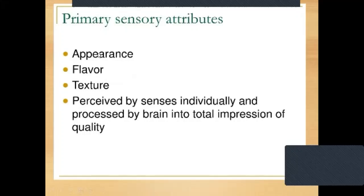Next is primary sensory attributes. There are three primary sensory attributes: first is appearance, second is flavor, and third is texture. For appearance of the food product, it is evaluated by the human eyes. If we take the food in the market, at home, or any other place, we are firstly attracted by the color of the food.